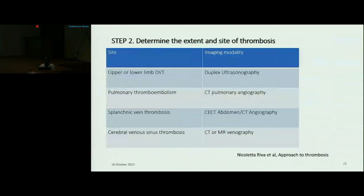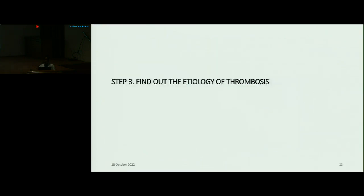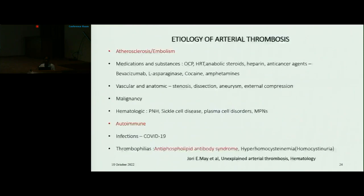The second step is to determine the extent and site of thrombosis. Even after history and physical examination we get a brief idea, but we need to confirm using an imaging modality. The third step is to find out the etiology of thrombosis. For arterial thrombosis, there is a wide array of etiologies, but the most important causes are atherosclerosis, embolism, metabolic abnormalities, autoimmune causes, and thrombophilias including antiphospholipid antibody syndrome.